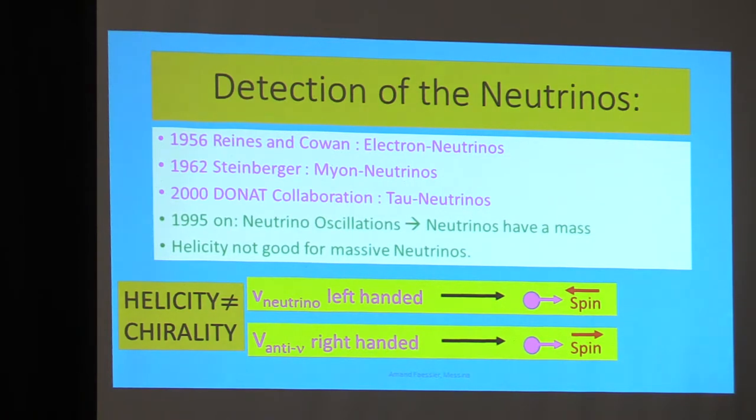To decide to detect the neutrino is easy, but then to detect it, that is a little bit more difficult. But then Steinberger, six years later, detected another neutrino called muon neutrino. And the DONUT collaboration in the year 2000 detected a third neutrino, the tau neutrino. So we have today three neutrinos in the three families.